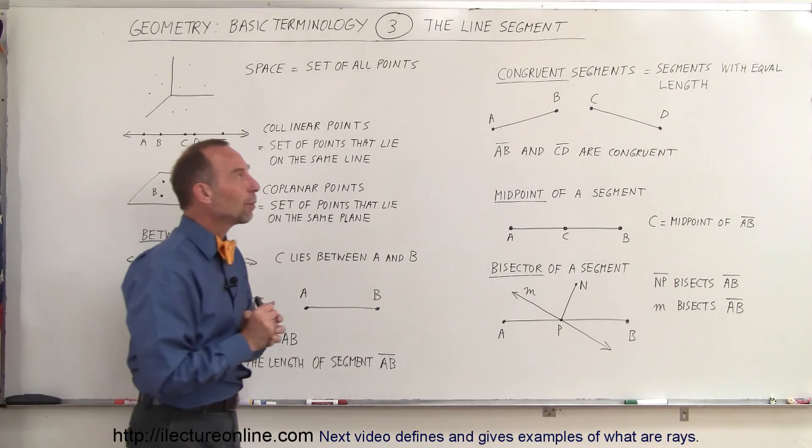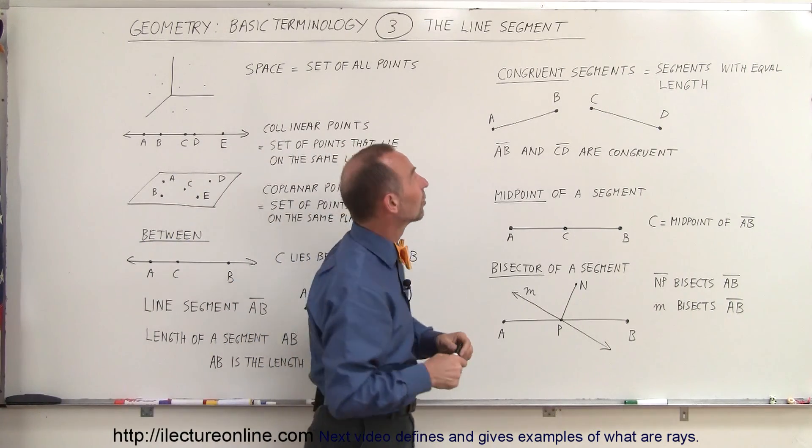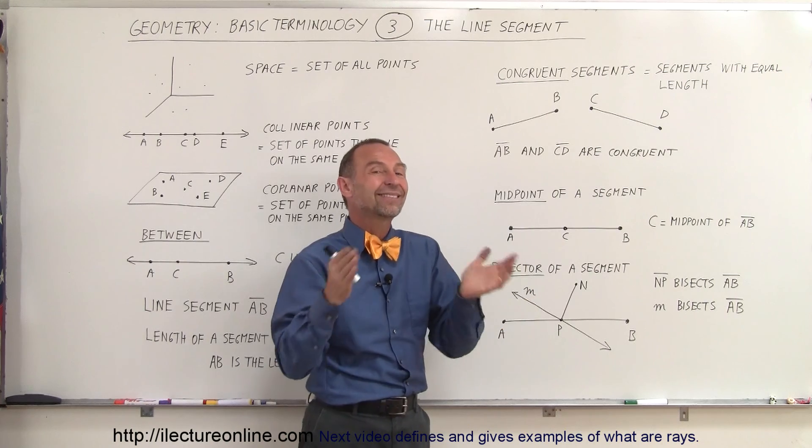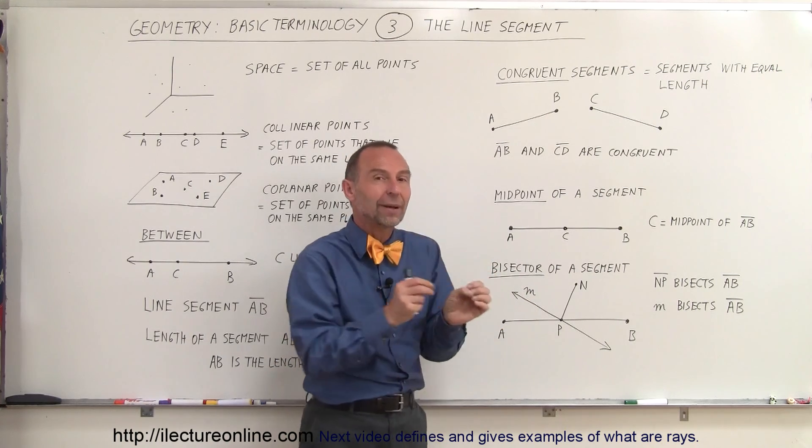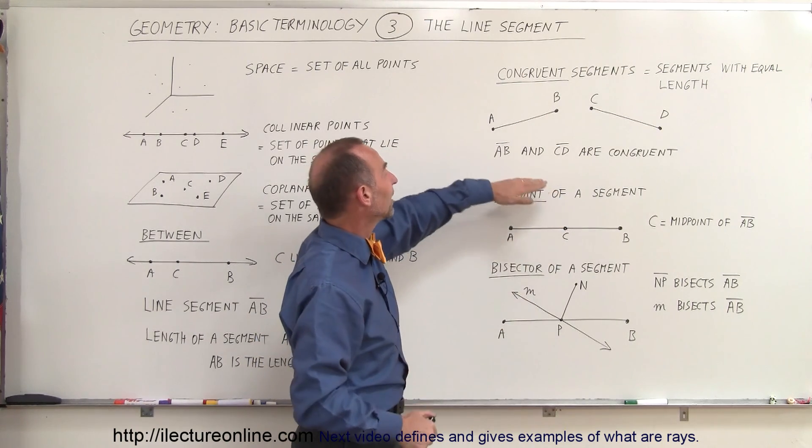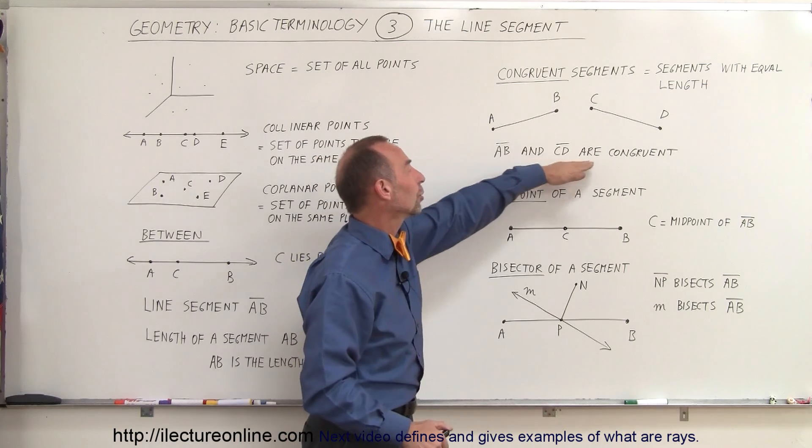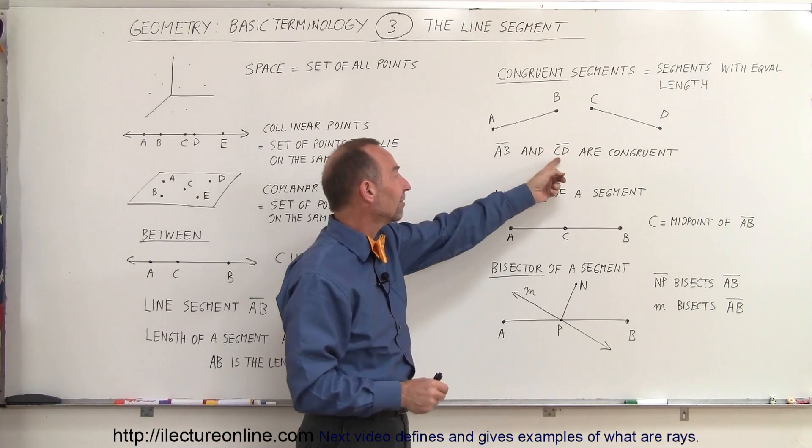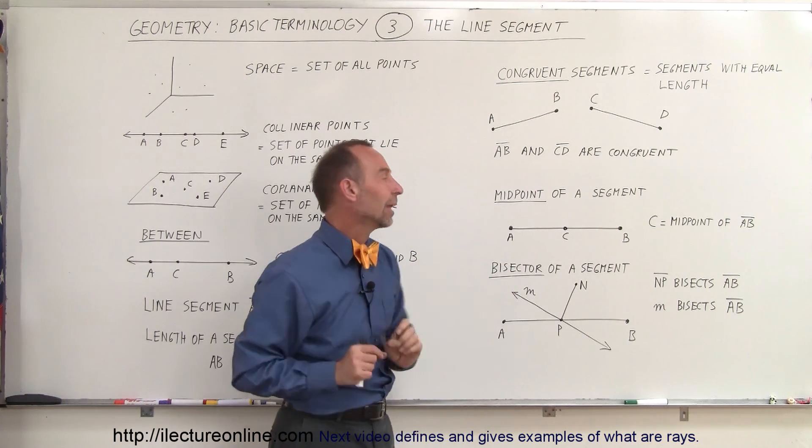Coming over here, we talk about what we call congruent segments. When we talk about congruent, we talk about the same. In the case of segments, we talk about the same length. So when we say that AB and CD are congruent, that means the line segment AB and the line segment CD are of the same length.